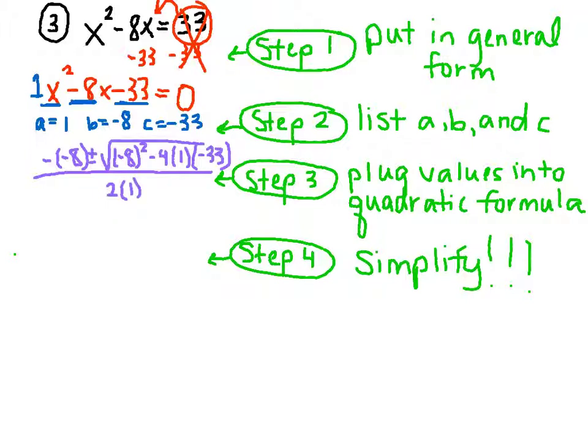And now the last thing you need to do is you need to simplify until you can't simplify anymore. So let's start with this. Negative times negative 8 is a positive 8, plus or minus the square root. Negative 8 squared is 64.